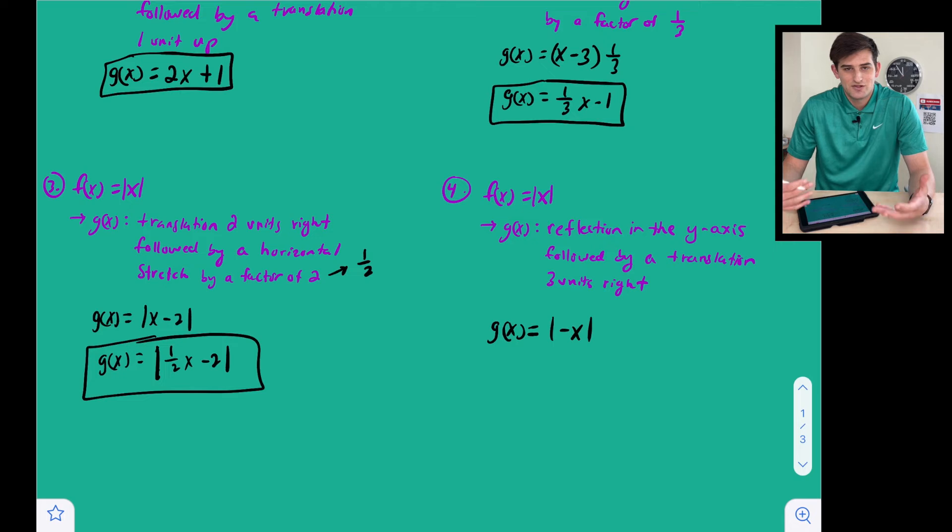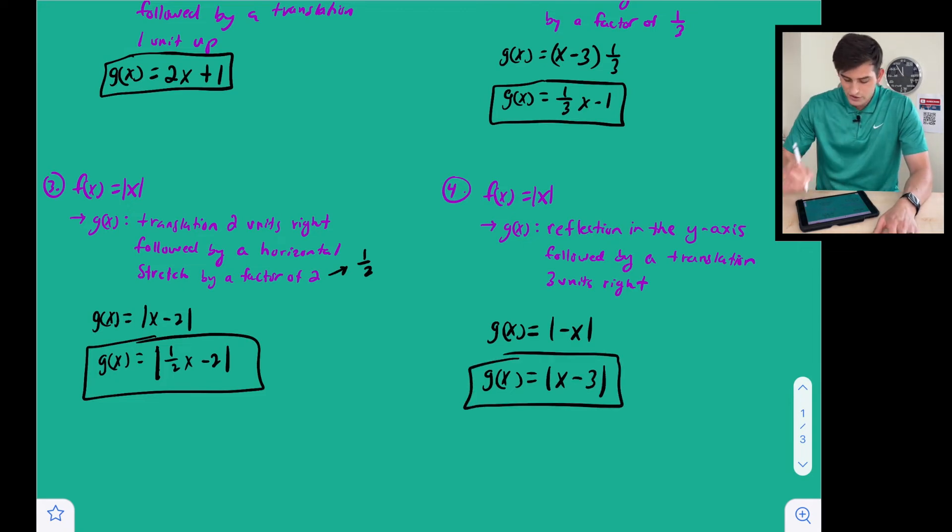Well, the absolute value of negative x is just absolute value of x, right? So now we are back to the absolute value of x, and it says translate three units right. So just like we did on example three here, right is going to be a minus in there, so we're going to say x minus three. So we have g of x equals the absolute value of x minus three.